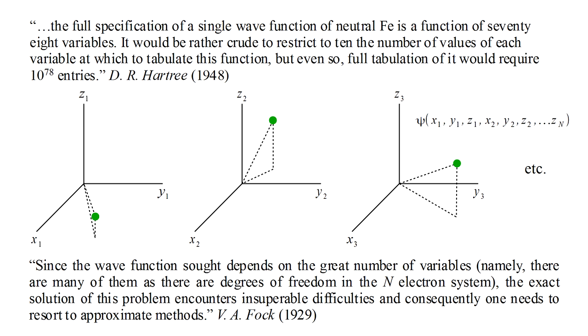Vladimir Fock put it this way: since the wave function sought depends on the great number of variables, namely, there are as many of them as there are degrees of freedom in the n-electron system, the exact solution of this problem encounters insuperable difficulties, and consequently one needs to resort to approximate methods.